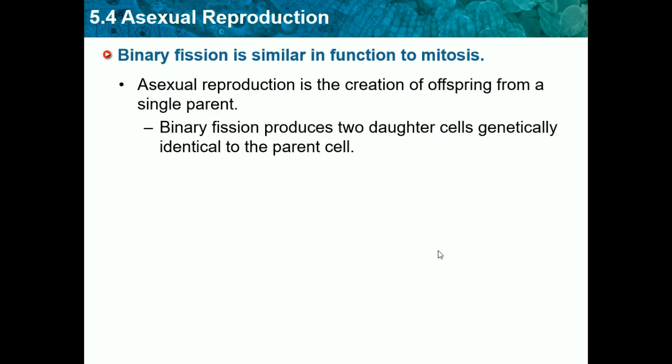Binary fission produces two daughter cells genetically identical to the parent cell, but it occurs in prokaryotes. Eukaryotes — which has the word 'you' in it — are us: big, complex, multicellular animals. But prokaryotes are those small bacteria, unicellular organisms that have no membrane-bound organelles. So basically binary fission is asexual reproduction but in prokaryotes — it's the same thing.